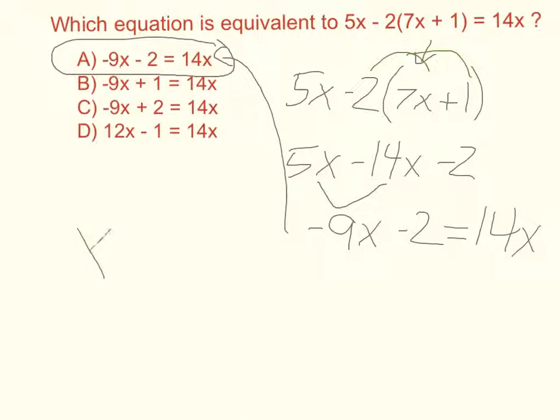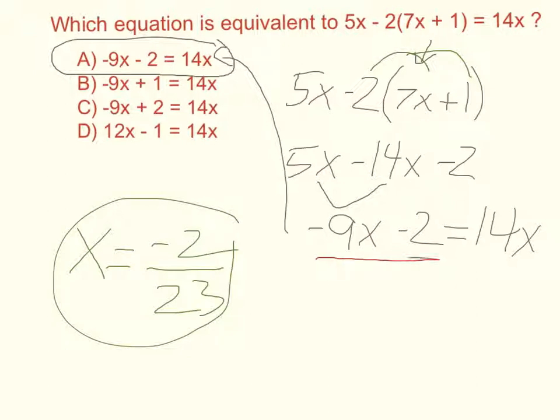I'm just going to leave you with the idea that that value of x is going to be negative 2 over 23, which is what I get when I solve this. But notice we didn't even have to do that. What we were able to do in order to find the answer was to compare this left side of the equation with this left side of the equation and see that they were equivalent. Thank you.